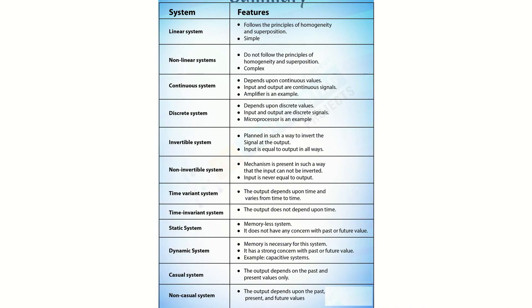A system is a collection of components — computational units — that when interconnected provide a signal proportional to the signal fed into the system. It will convert your input signal to some other form — output signal — with a correlation. That is called a system. I strongly recommend that, being a science or engineering student, you build these mathematical expressions, model them, and demonstrate them before you actually use real-world signals.